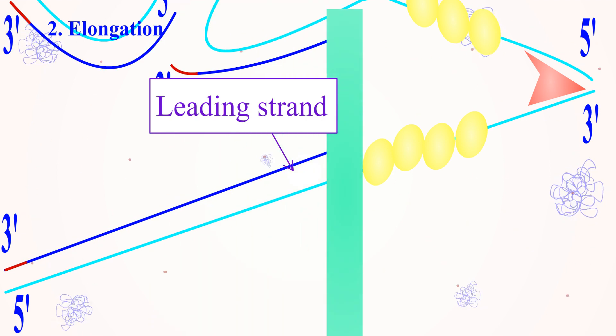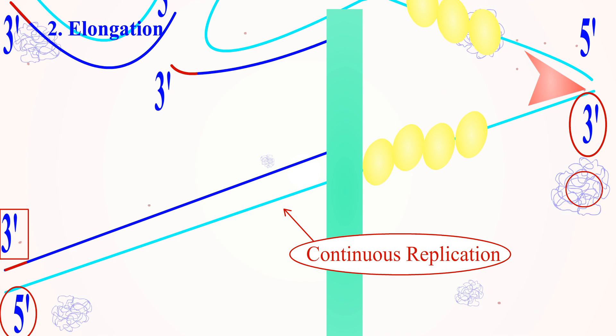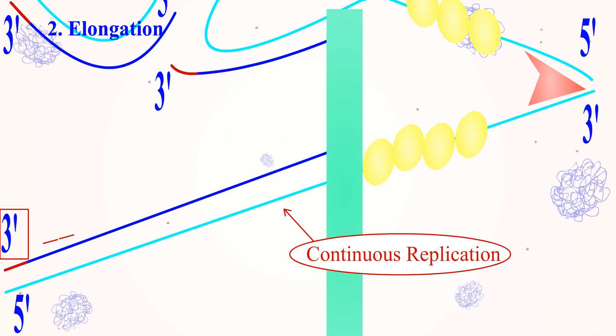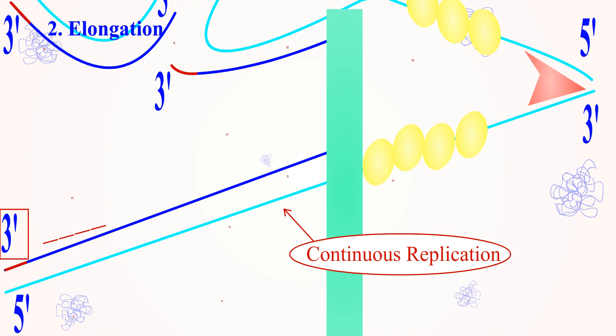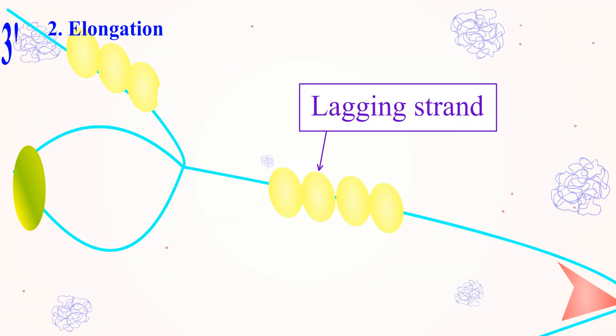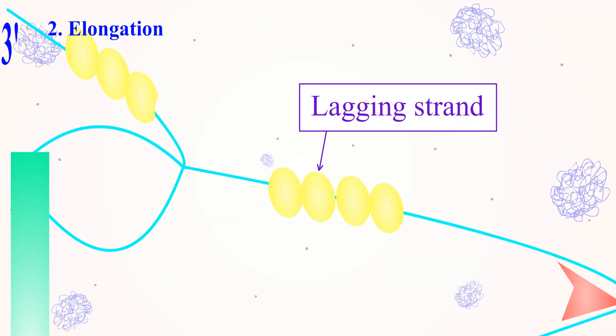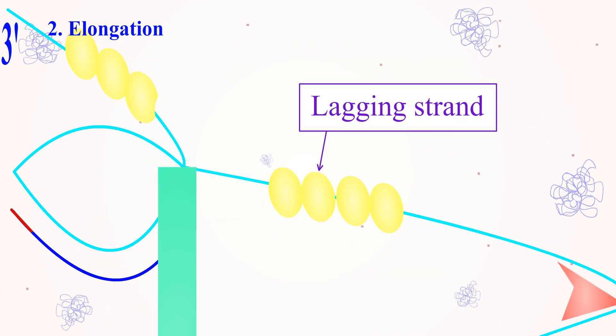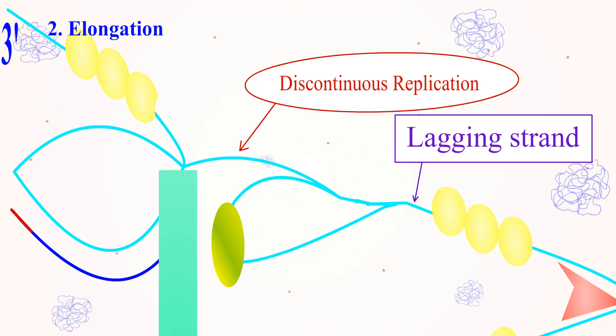Hence, the replication will occur in a continuous manner in the 3 prime to 5 prime direction. In the complementary strand in the 5 prime to 3 prime direction, the replication occurs in a discontinuous manner.